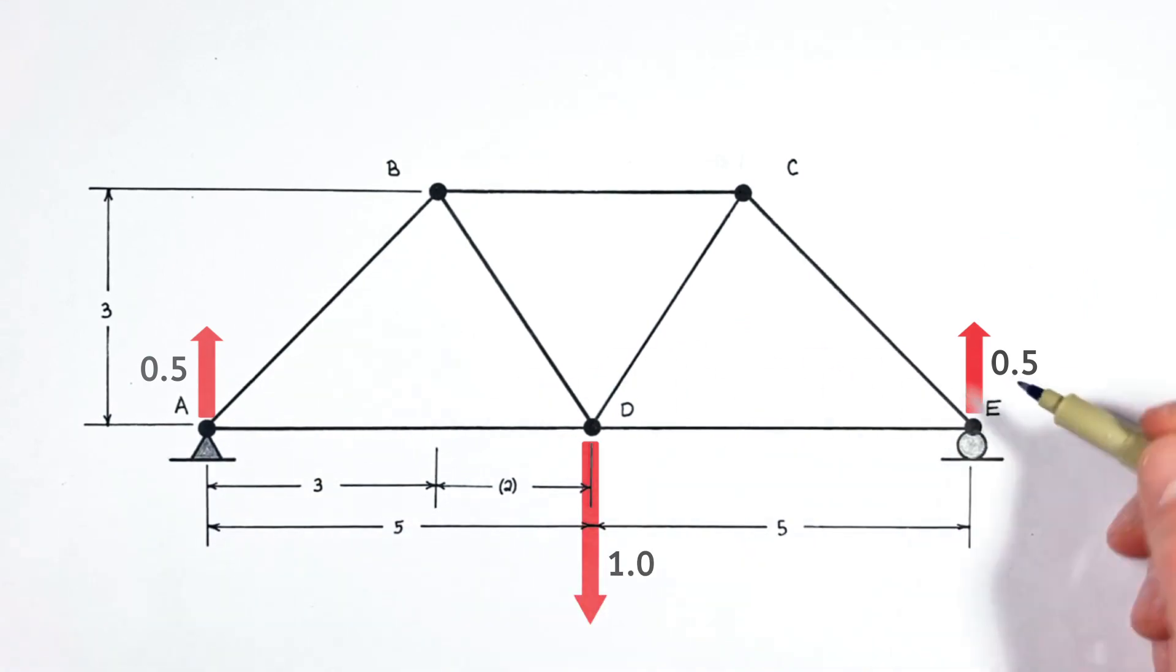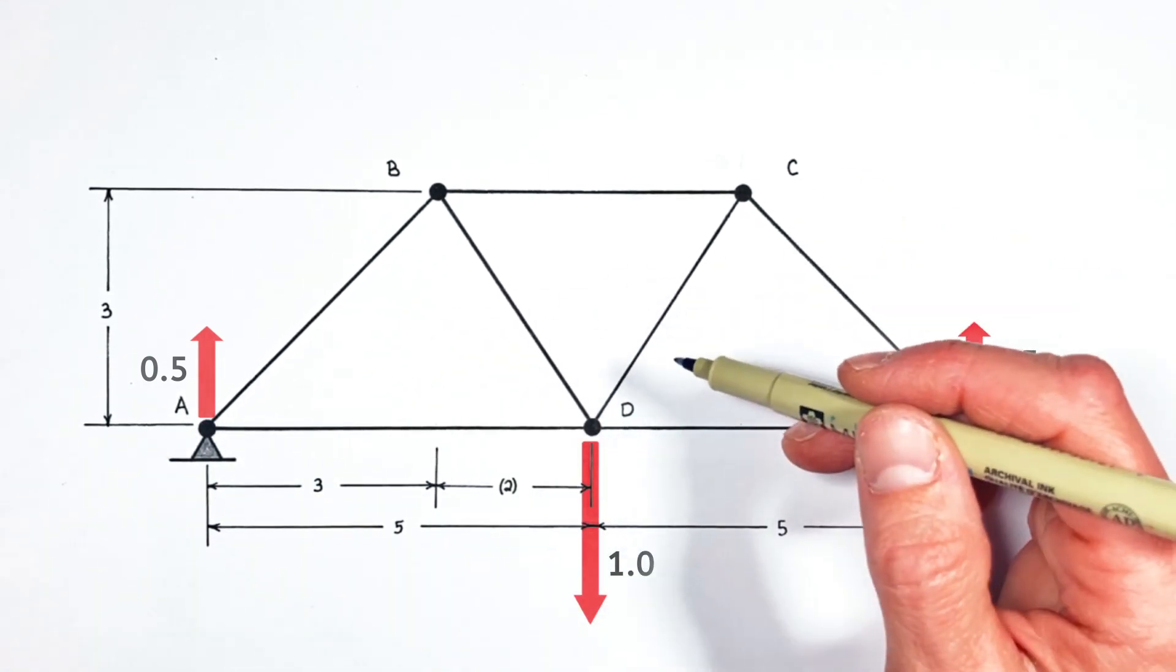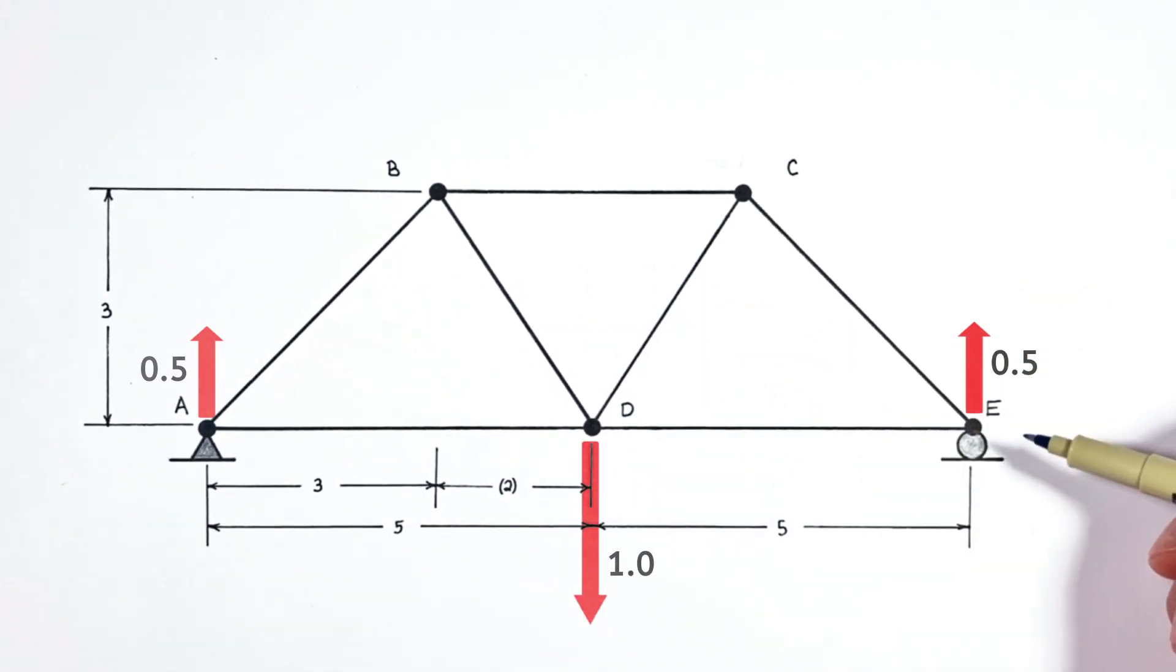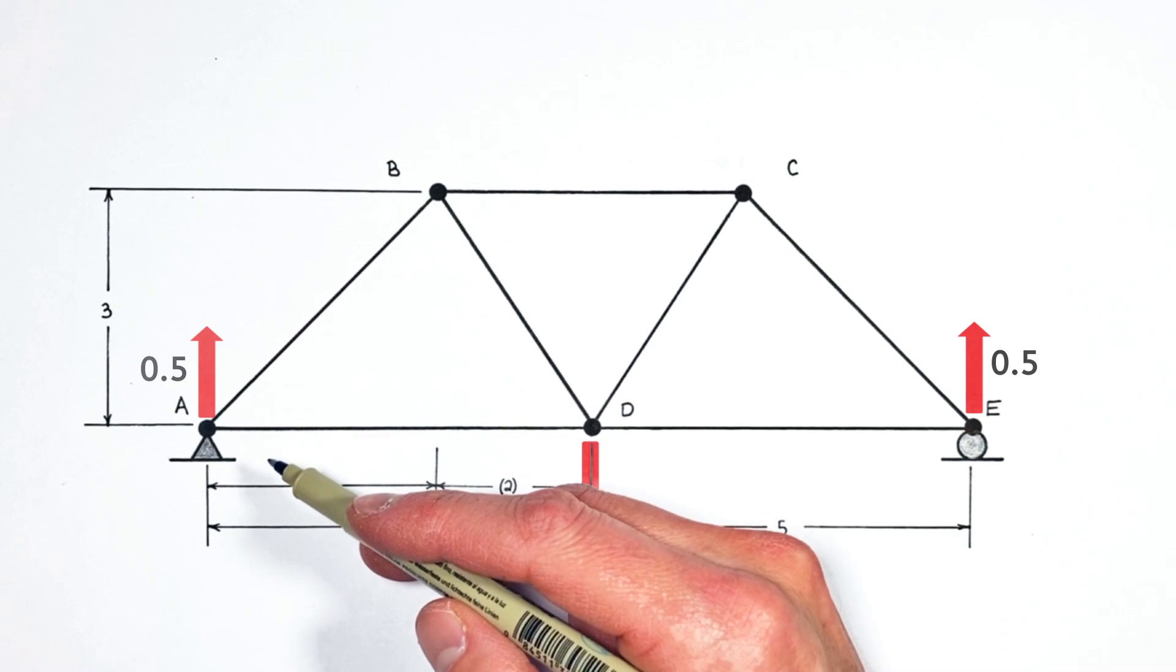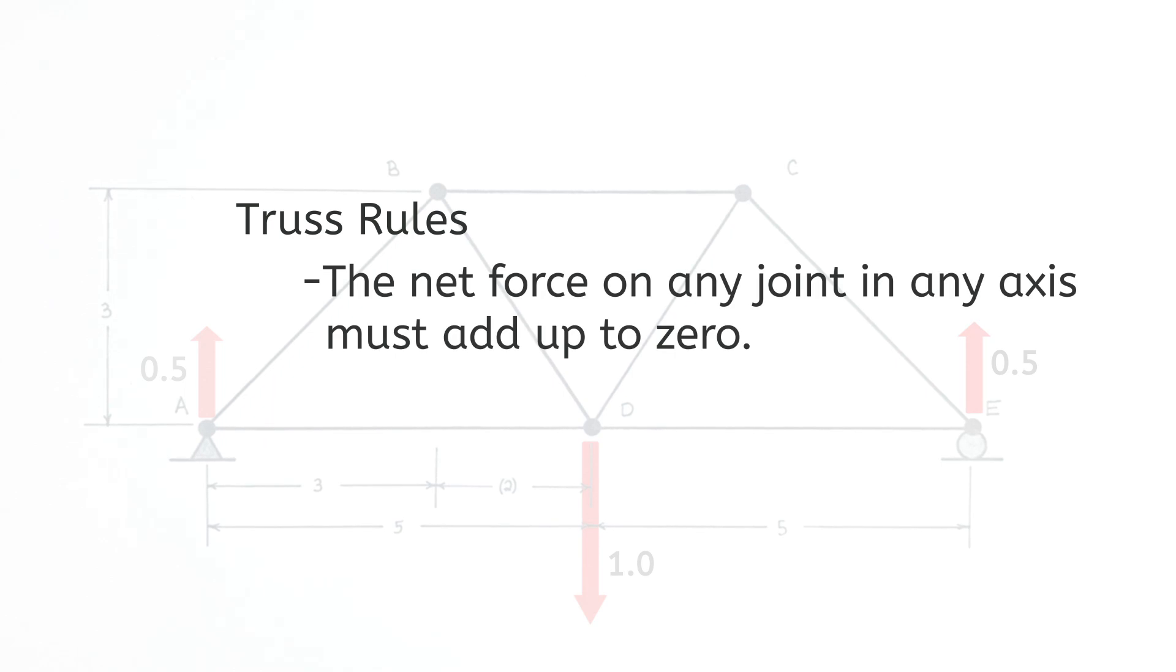And knowing the forces by each of the supports, we can now apply the method of joints to this truss in order to solve for the forces in each joint. So starting over here at A, there's two paramount rules of truss analysis that we have to keep in mind here. The net force on any joint in any axis always has to add up to zero, and beams can only act along their axis.